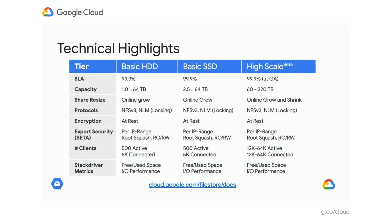That's kind of a good segue into our tech specs. First, I'm going to cover a gestalt of what I'm showing you here. FileStore is a zonal service. It offers an SLA of three nines for the basic tiers, which when High Scale launches to GA will also match in High Scale.